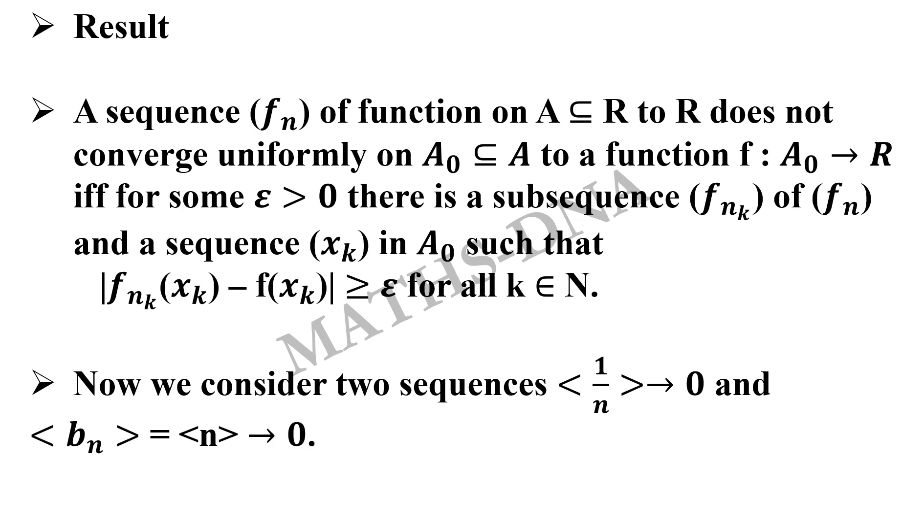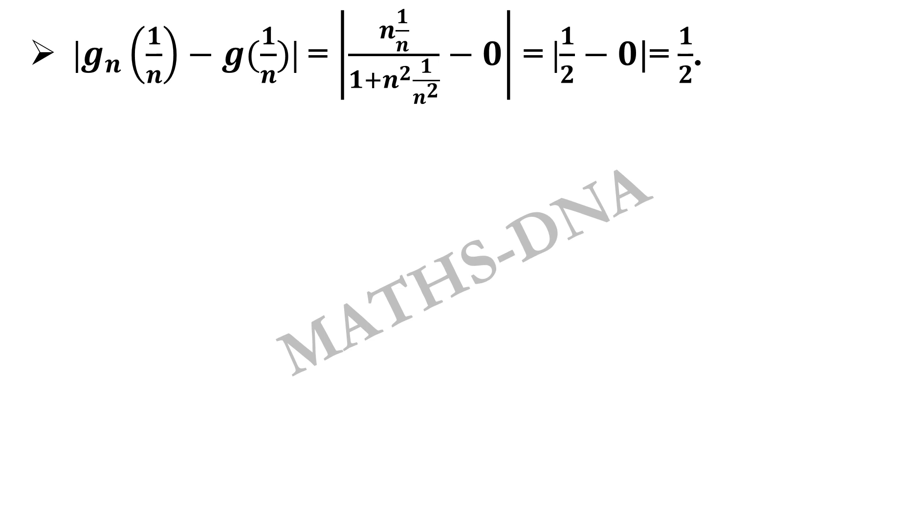So consider the two sequences: 1 upon n tends to 0, and b_n that is n tends to infinity. Here b_n, that is n, is the suffix of the sequence.